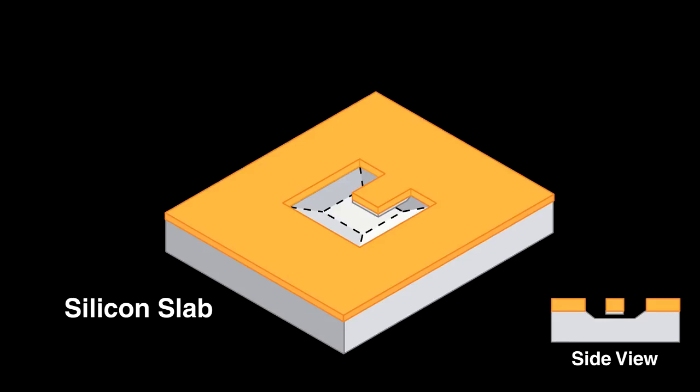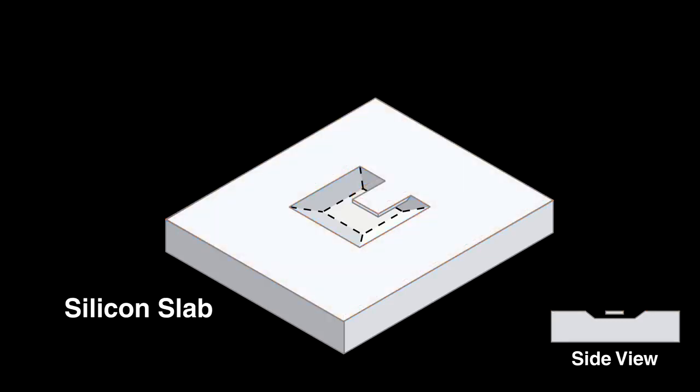If we wash it away at just the right point before it dissolves the silicon just underneath the mask, it will leave a small cantilevered beam hanging over a hole with a square bottom.